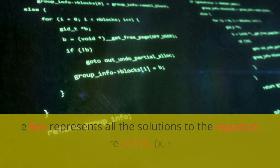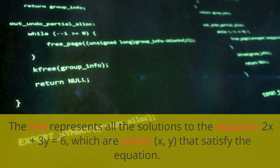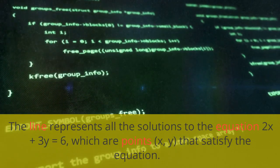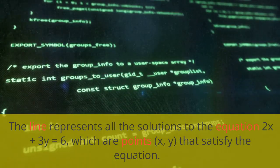The line represents all the solutions to the equation 2x plus 3y equals 6, which are points (x, y) that satisfy the equation.